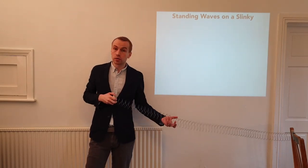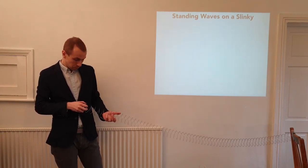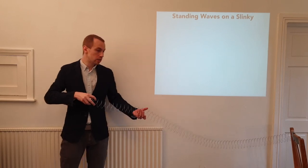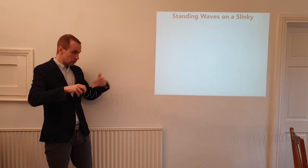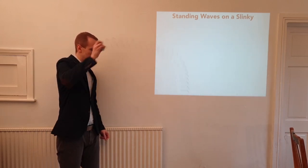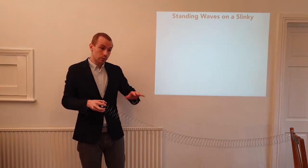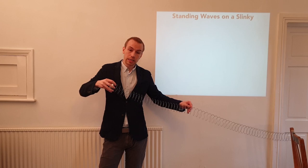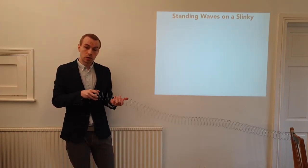We call it a standing wave because the positions of the nodes and the antinodes — the positions where the wave is static or moving the most — don't appear to be travelling along the wave; it looks like it's just moving up and down. This is also the first harmonic, the fundamental harmonic. If we oscillate the slinky even faster, we can get the second harmonic. Doubling the frequency should halve the wavelength. We had a peak at each end and a node in the middle where the slinky didn't appear to be moving — all of these harmonics are examples of standing waves.